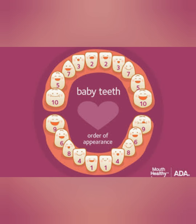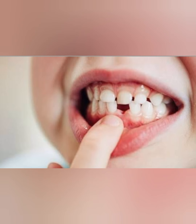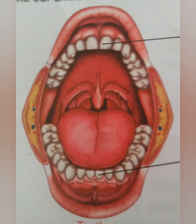When he or she is about six years old, the second set starts to grow and the milk teeth fall out. The baby teeth fall out. This new set of teeth is permanent.